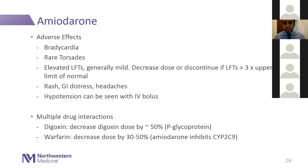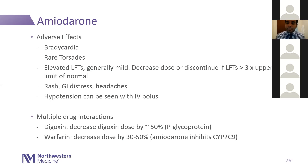Two important drug interactions with amiodarone: decrease the digoxin dose by 50% because amiodarone is a P-glycoprotein inhibitor and digoxin is metabolized through that pathway. For warfarin, also decrease the dose by 30 to 50% because amiodarone inhibits the CYP2C9 pathway through which warfarin gets metabolized.